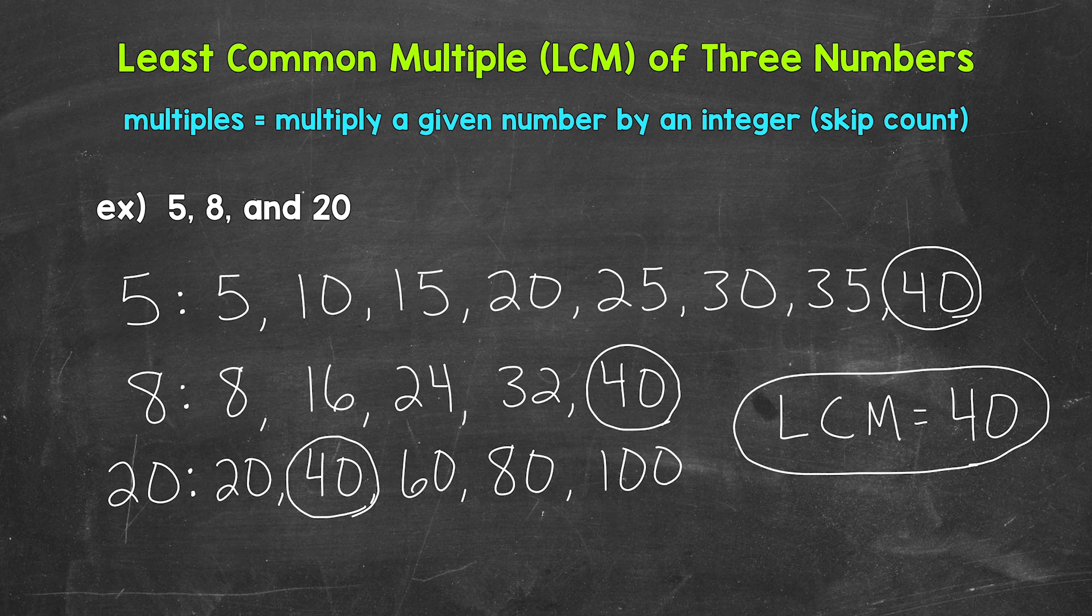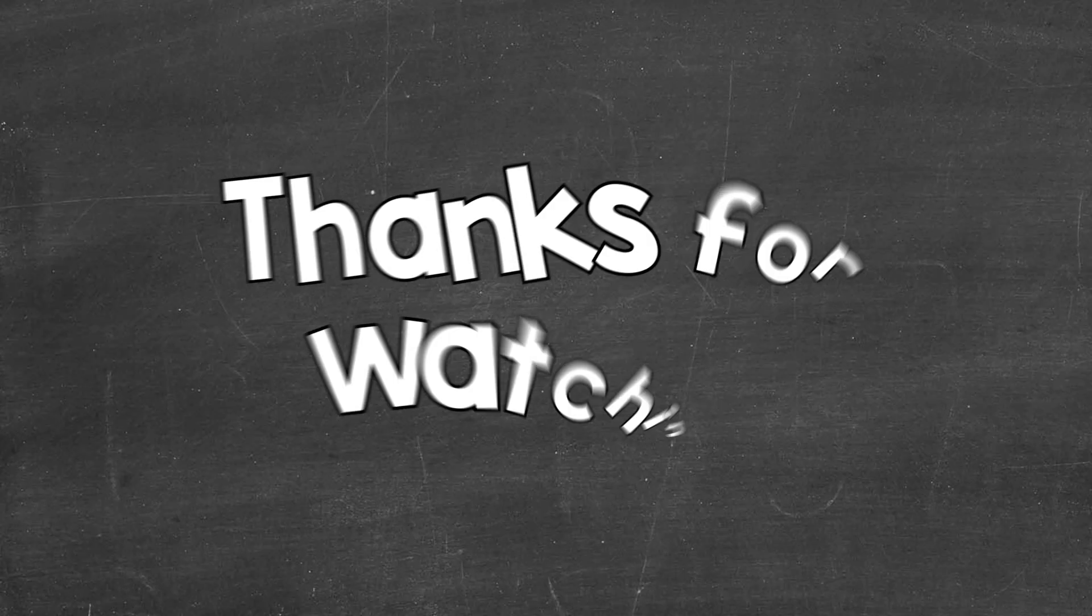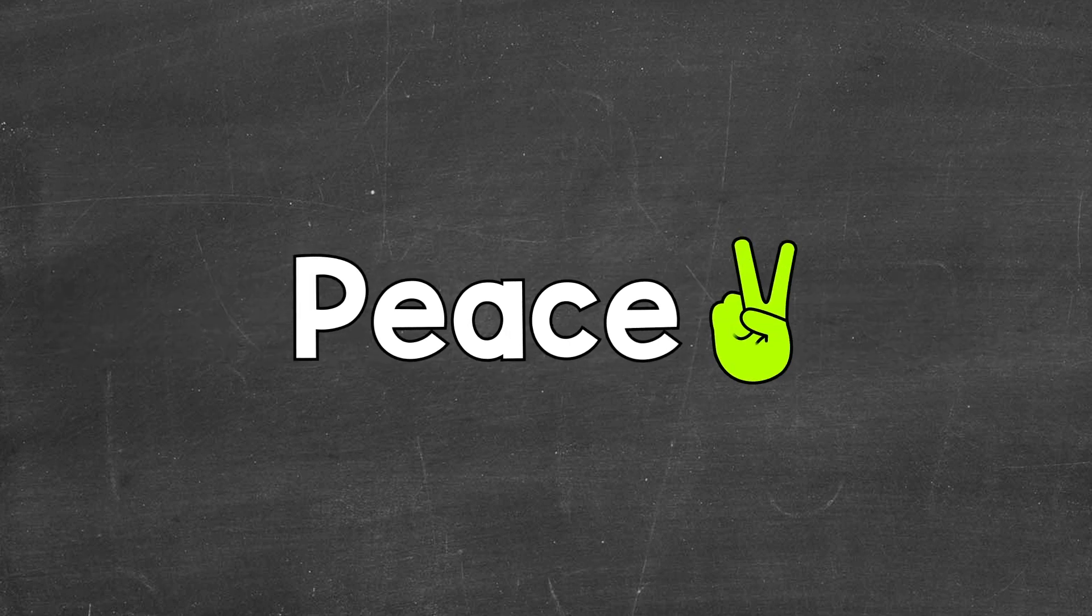So there you have it. There's how to find the least common multiple of three numbers. If you need another example, I dropped the link to part 2 down in the description. I hope that helped. Thanks so much for watching. Until next time, peace.